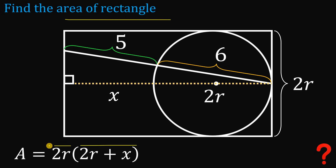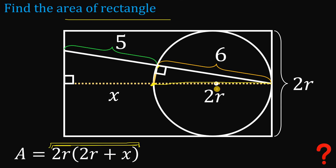We have the formula for the area, but we need to find the value of 2r multiplied by (2r plus x). To do this, we create another right triangle by connecting two additional points. This is a right triangle with a 90-degree angle because the hypotenuse is the diameter of the circle. We can now see two similar triangles.